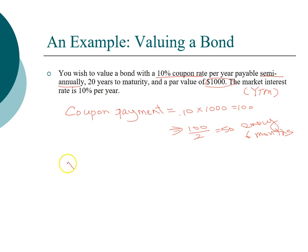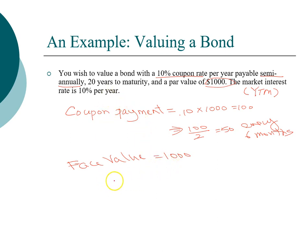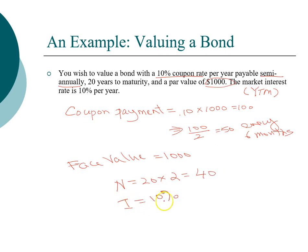The face value or par value is $1000. If you do not see a face value given, assume it is $1000. This bond has 20 years to maturity, and because it is a semi-annual bond, the investment horizon is 40 periods — you'll receive 40 coupon payments. The interest rate is 10% yield to maturity, which on a semi-annual basis is 5% every six months.